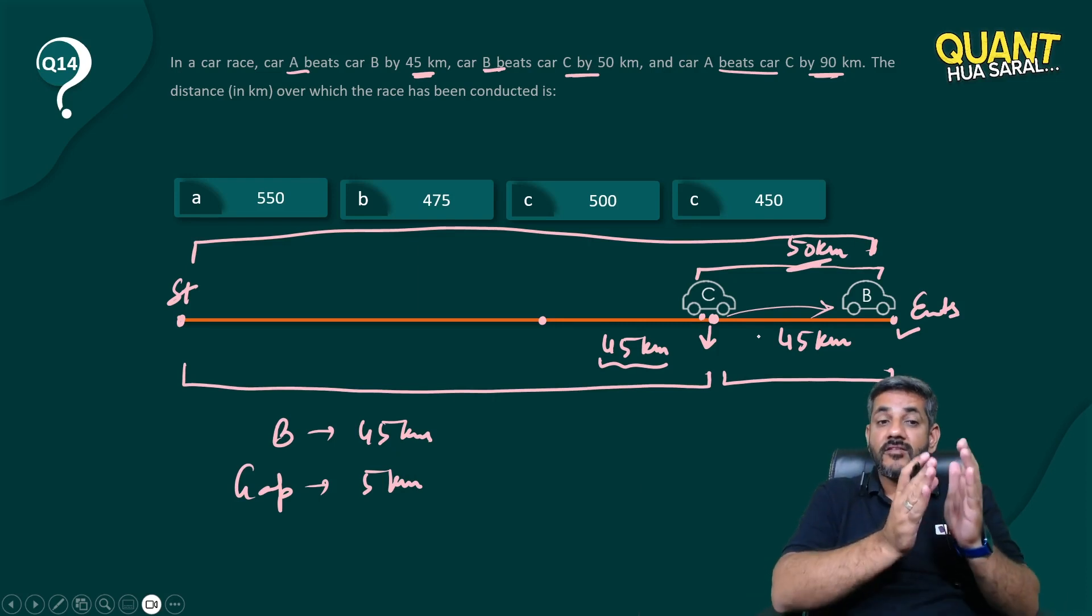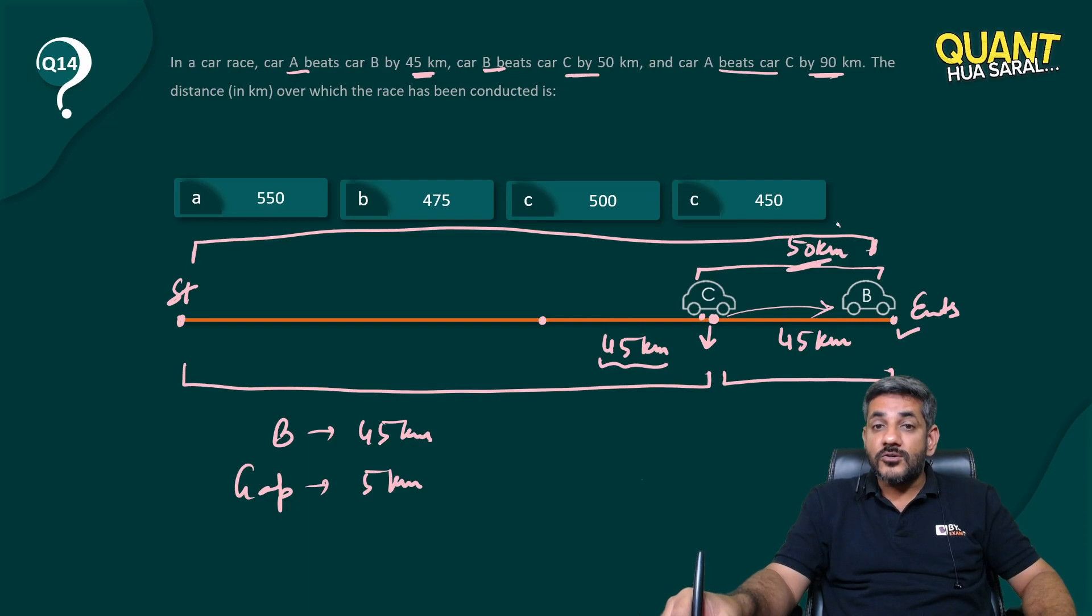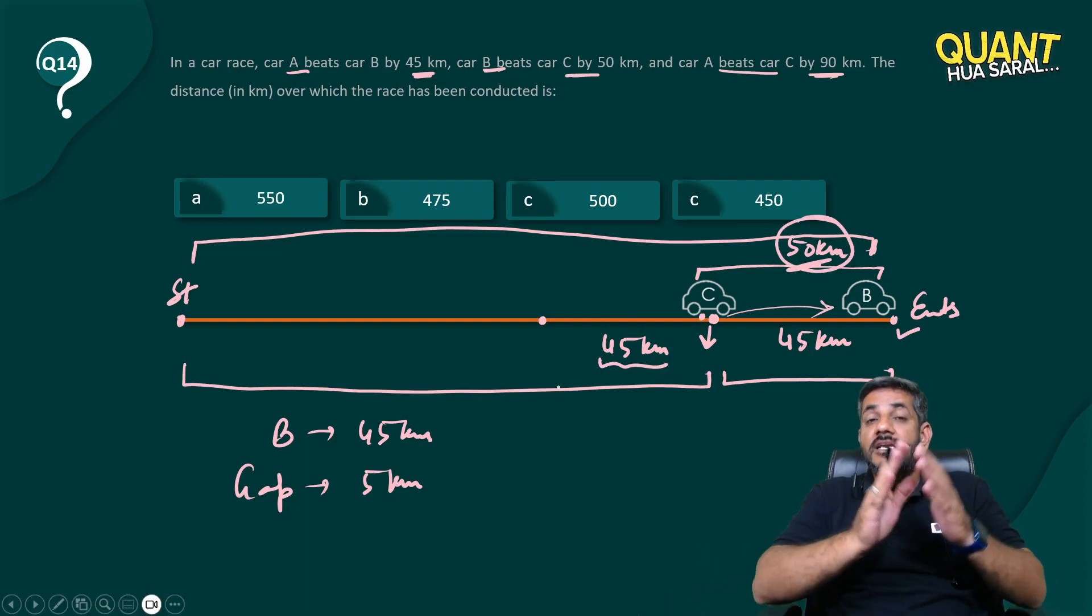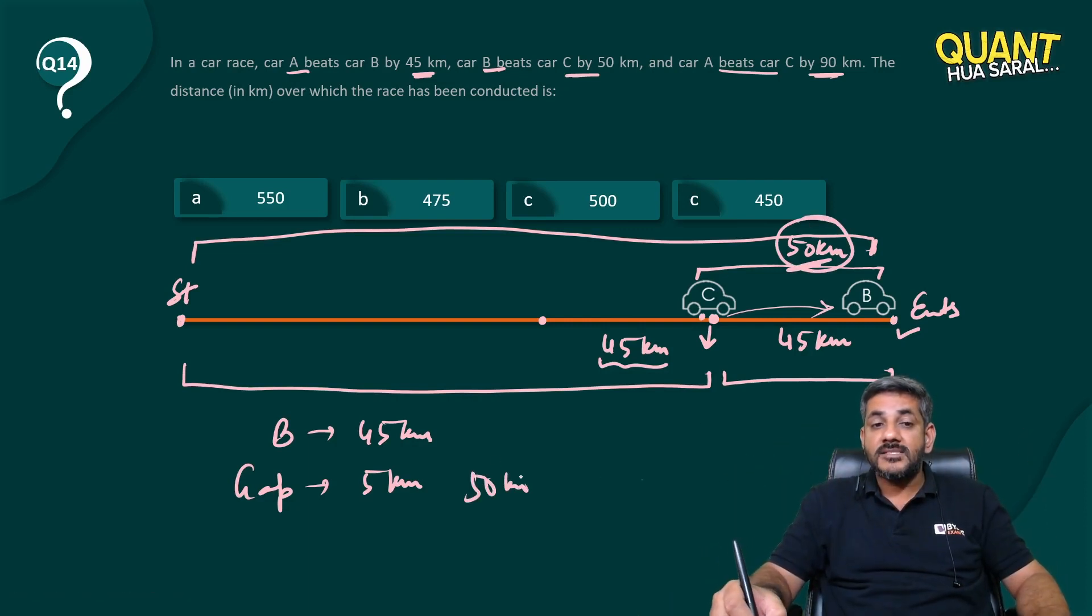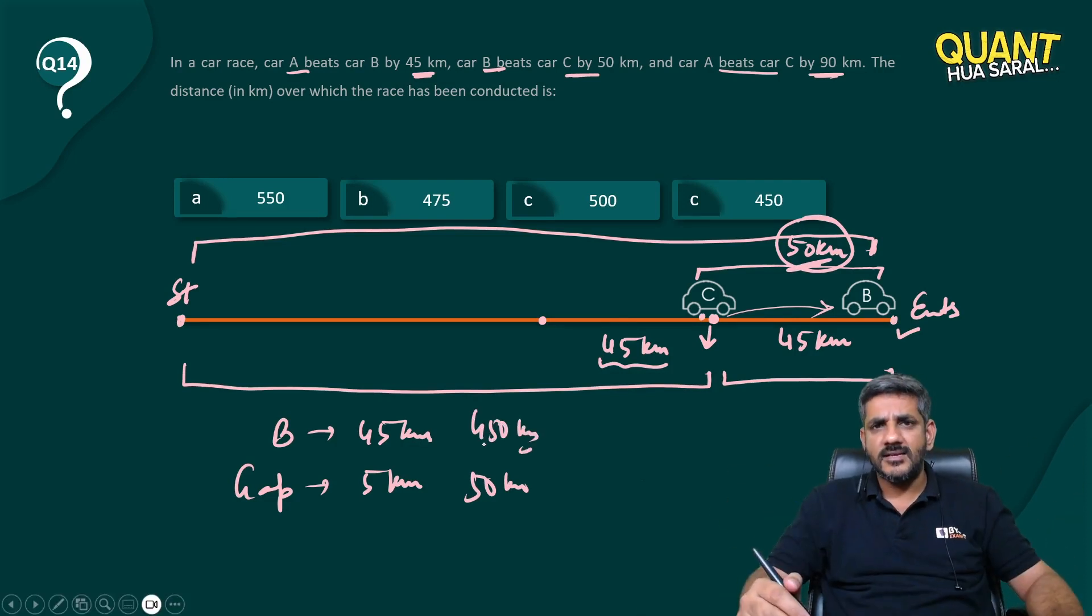So to create a gap of 5, if B runs 45, then to create this gap of 50 in the complete race, can I say that B must have run 450? And that's what the length of the race is.